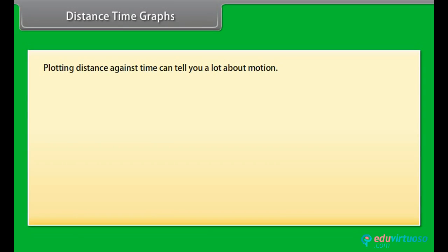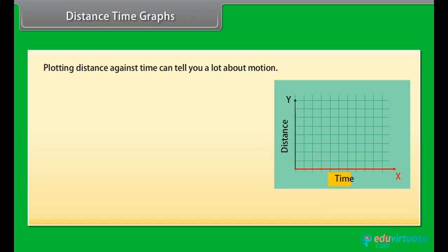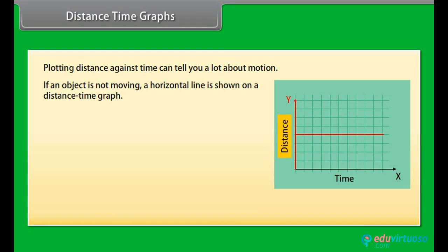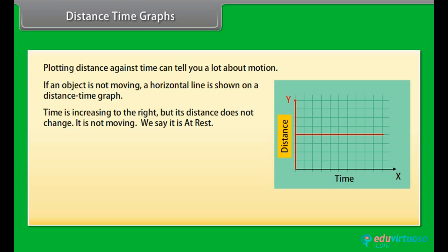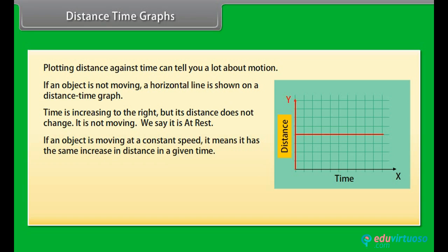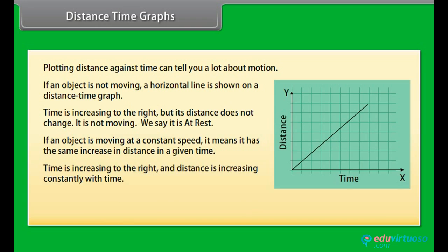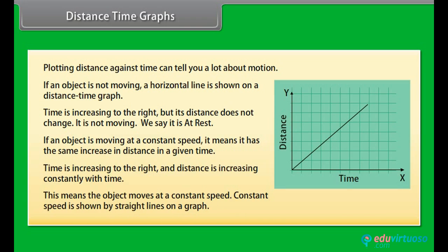Distance-time graphs. Plotting distance against time can tell you a lot about motion. Time is always plotted on the x-axis — the further to the right, the longer the time from the start. Distance is plotted on the y-axis — the higher the graph, the further from the start. If an object is not moving, a horizontal line is shown on the distance-time graph: time increases but distance does not change — it is at rest. If an object is moving at a constant speed, distance increases constantly with time, shown by a straight line on the graph.